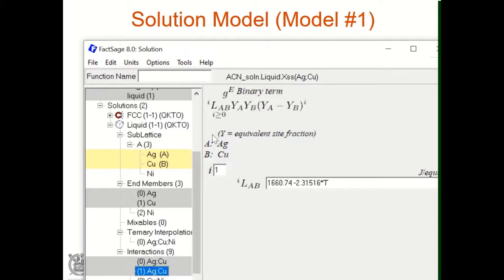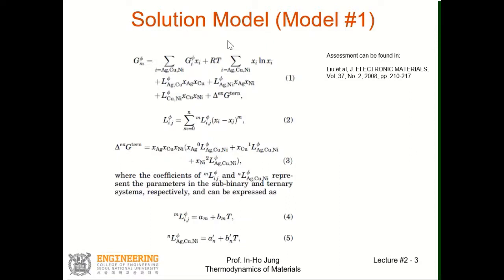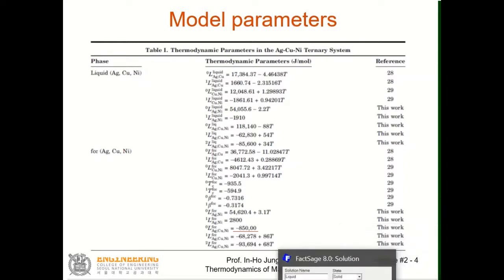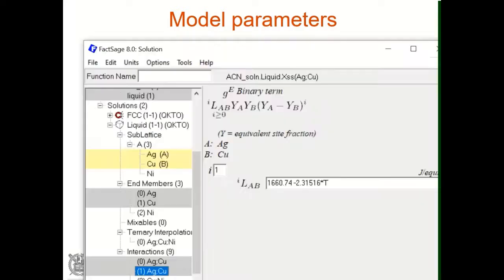For example, L1 is 1660.74 minus 2.315 times temperature, to the power 1. If you compare with the paper, it is exactly the same value.